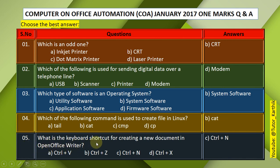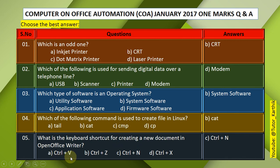Question 5: What is the keyboard shortcut for creating a new document in OpenOffice Writer? A. Ctrl+V, B. Ctrl+Z, C. Ctrl+N, D. Ctrl+X. The answer is C — Ctrl+N.